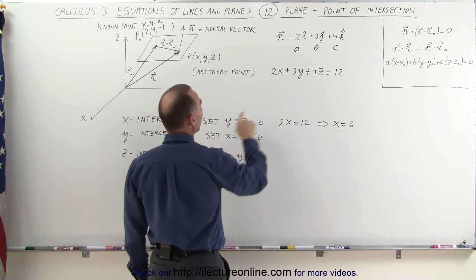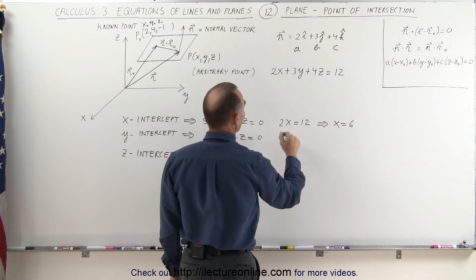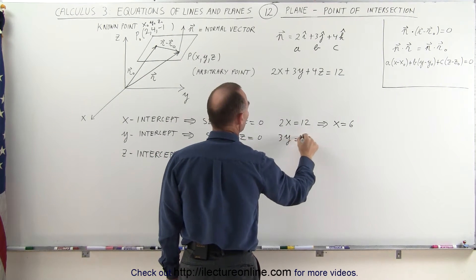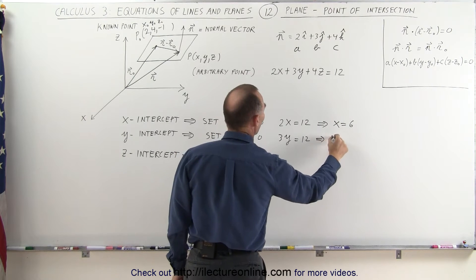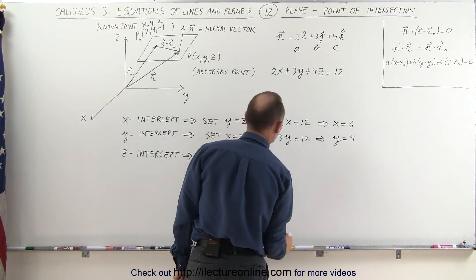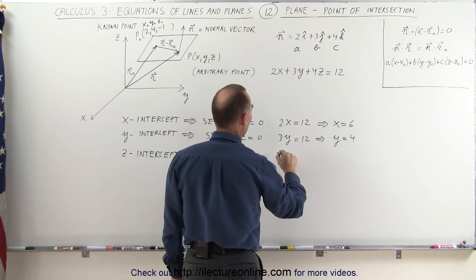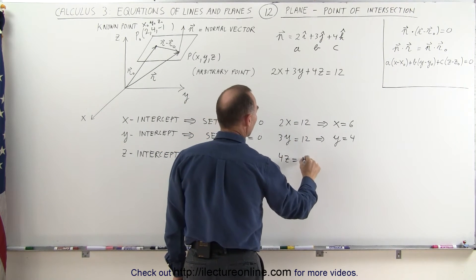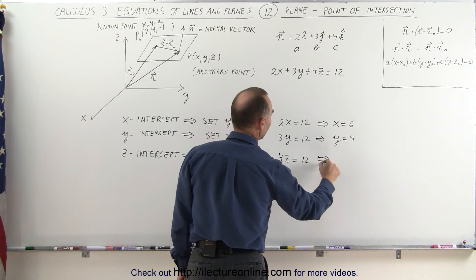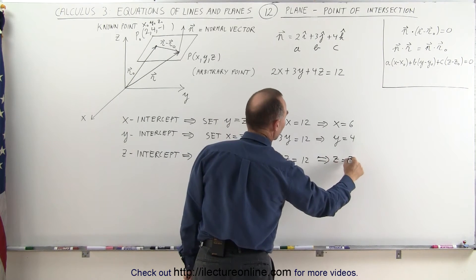For the y-intercept, we set x and z equal to zero, which gives us 3y equals twelve, so y equals four. Finally, to find the z-intercept, we set x and y equal to zero, getting 4z equals twelve, which means z equals three.